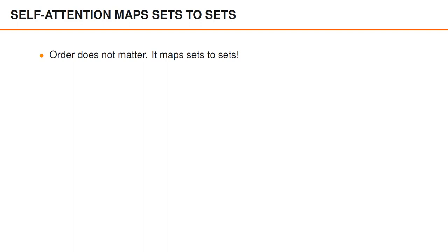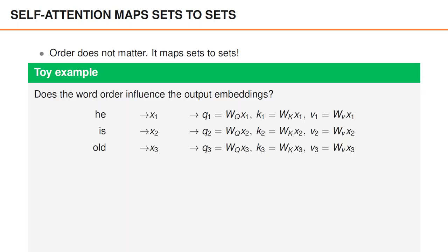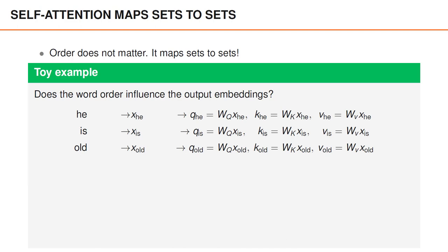Let us look at an example with only three words to study the influence of word order. Suppose that the input sentence is he is old. I'd now like you to consider what would happen to the word embedding if the input had a different order such as old is he or old he is. We would normally compute the query key and value vectors for all input words and give them indices one two and three. However for the purpose of illustrating the invariance to order we can instead use the input words as indexes.